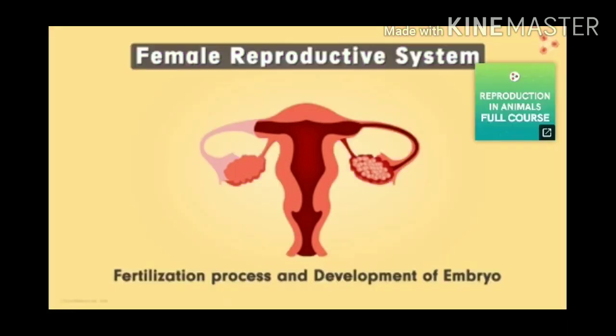So we can say that vagina is the site for receiving the sperm and also passing the baby out of the body. In the next video, we will discuss the fertilization process and development of the embryo. Thank you students, bye.